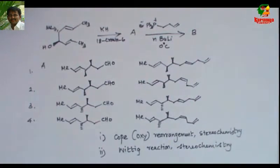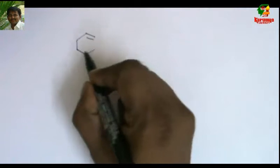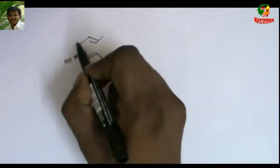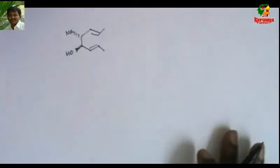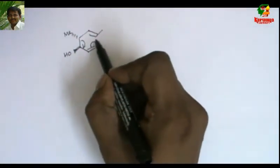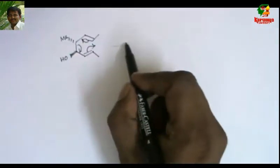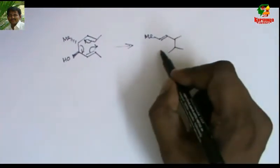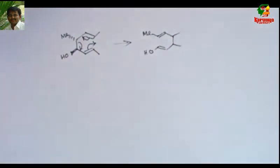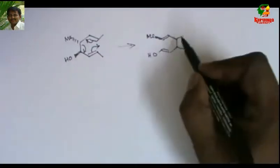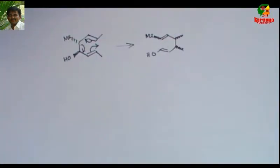First let us go to the Oxicope rearrangement. This is the given product. Here they are trans and OH is here. Methyl is here. The reaction is very simple. It undergoes 3,3-sigmatropic rearrangement to give a product like this. But for the time being I don't know what the stereochemistry is of this as well as this. If you know the transition state you can easily predict these things.